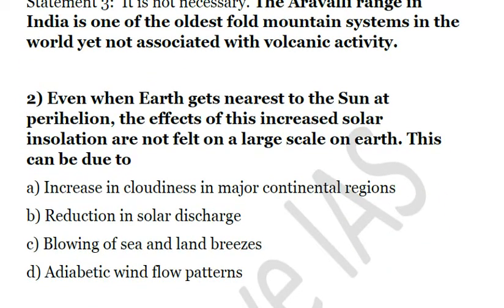Second question: Even when Earth gets nearest to the sun at perihelion, the effects of this increased solar insolation are not felt on a large scale. This can be due to A) increase in cloudiness in major continental regions, B) reduction in solar discharge, C) blowing of sea and land breezes, or D) adiabatic wind flow pattern. Perihelion is the position in which Earth is closest to the sun. The effect of increased solar insolation is not felt because of the differential heating of land and sea. This leads to blowing of sea and land breezes, which redistribute the overall temperature. That's why the increased solar insolation doesn't make much impact — the answer is C.